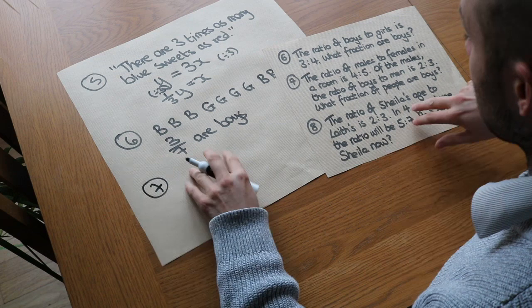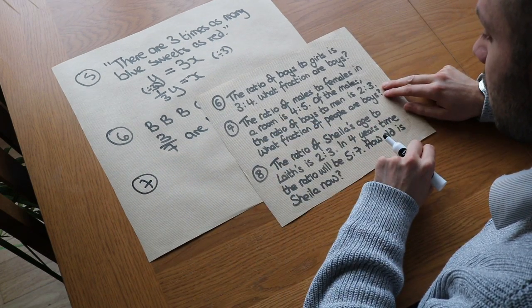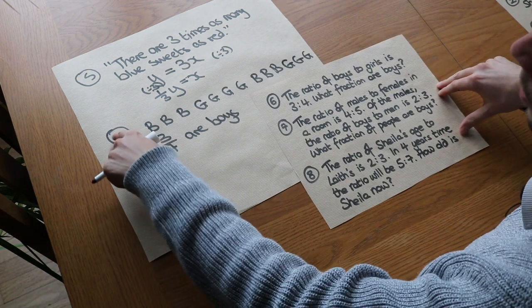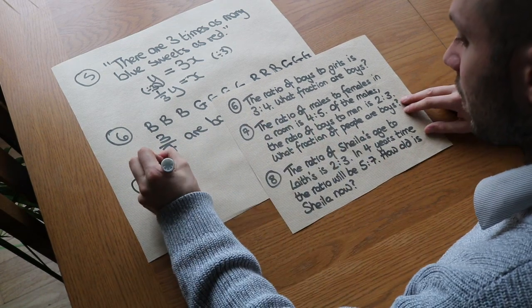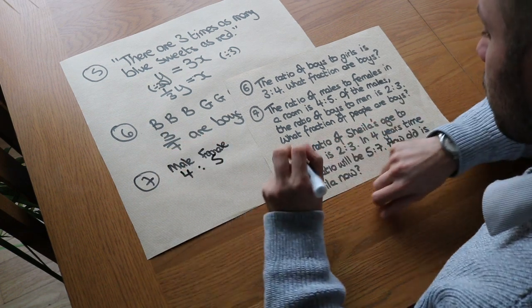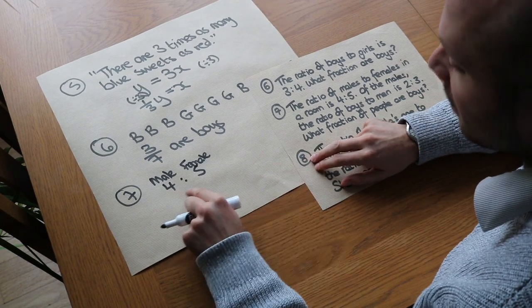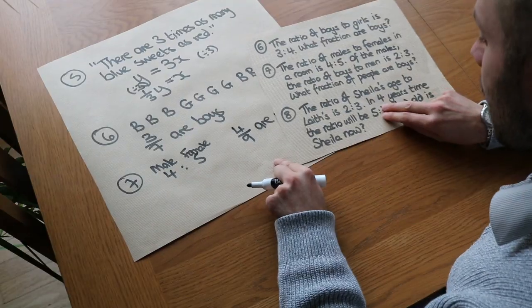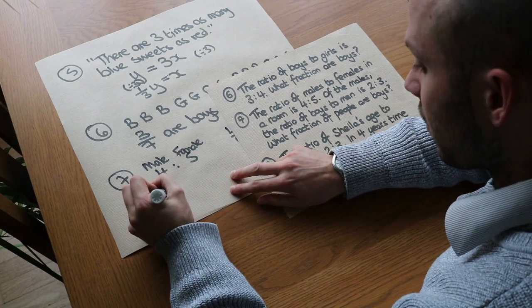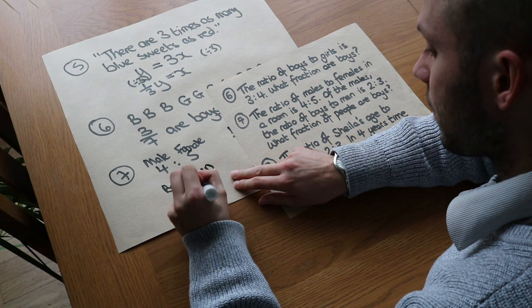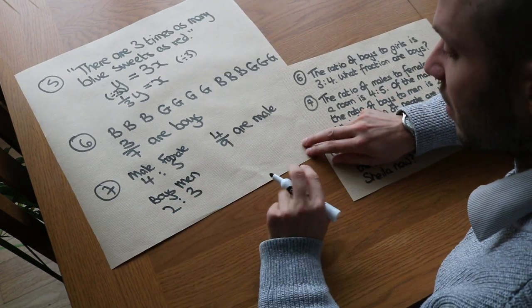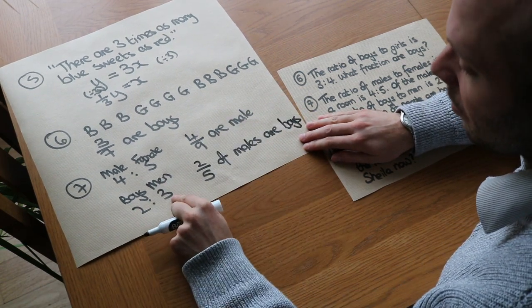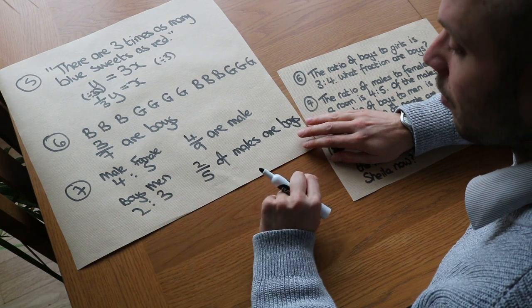Question 7 — this is a difficult one. The ratio of males to females in a room is 4 to 7. Of the males, the ratio of boys to men is 2 to 3. What fraction of the people are boys? Let's think about what fraction of people are male. If there are 4 male people and 7 female people, then 4-ninths of the people are male. And of the males, the ratio of boys to men is 2 to 3, so 2-fifths of the males are boys, because 2 out of those 5 male people would be boys.